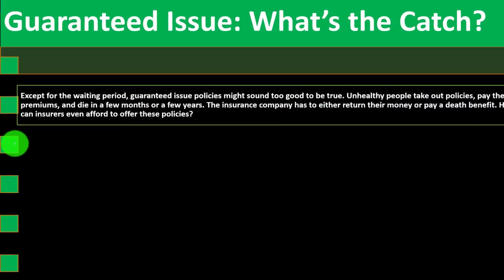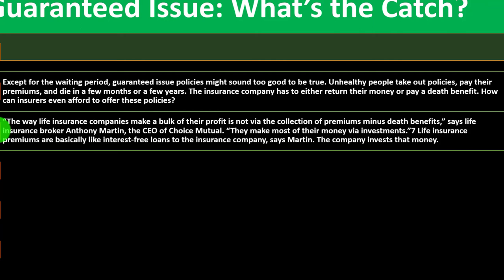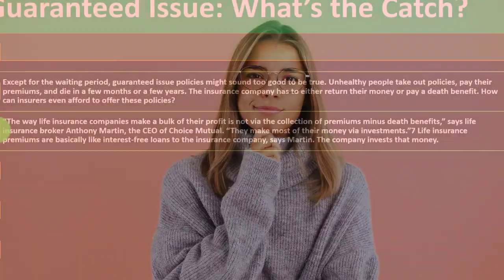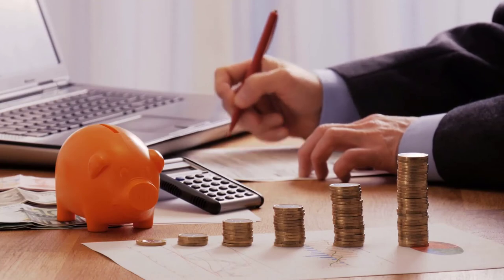What's the catch with guaranteed issue? Except for the waiting period, guaranteed issue policies might sound too good to be true. Unhealthy people take out policies, pay their premiums, and die in a few months or years. How can insurers afford to offer these policies? According to insurance broker Anthony Martin, CEO of Choice Mutual, life insurance companies make the bulk of their profit not via premiums minus death benefits, but via investments. Life insurance premiums are basically like interest-free loans to the insurance company — the company invests that money.